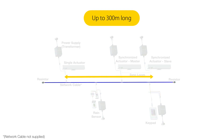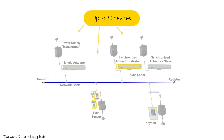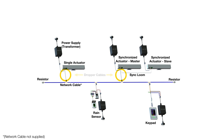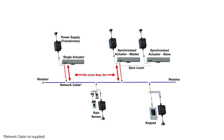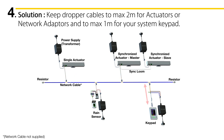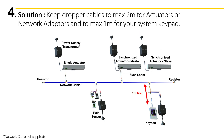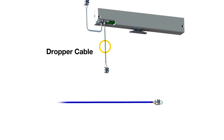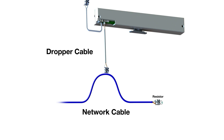The main network cable can be up to 300 metres long, and you can connect up to 30 devices to it. It's a good idea to plan your main network cable run so that the dropper cables to each device are as short as possible, as dropper cables that are too long will cause data corruption. Where a dropper cable connects an actuator or network adapter, it must be no more than two metres long. Where the dropper cable connects to a keypad, no more than one metre. If you have trouble getting the provided dropper cables to reach the network cable, simply loop the network cable closer to the device.